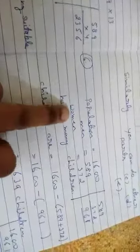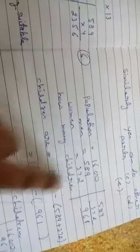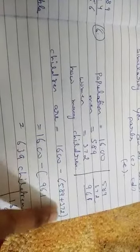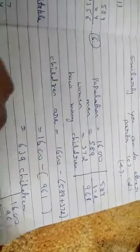Question number six: The population of a city is 1,600. If 589 are men and 372 are women, find the number of children. So the population is 1,600 total. How many are men? 589. How many are women? 372. We need to find the remaining amount, which is the number of children.